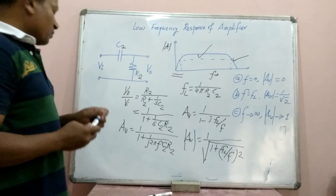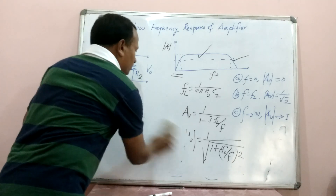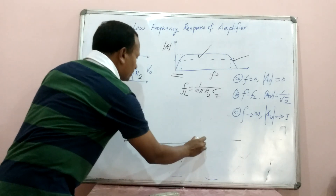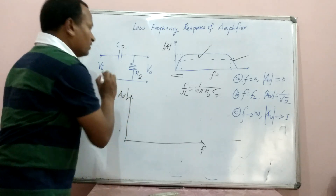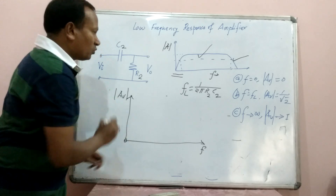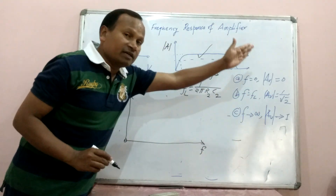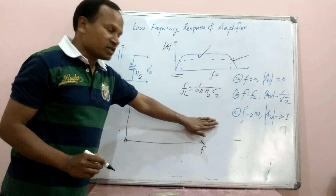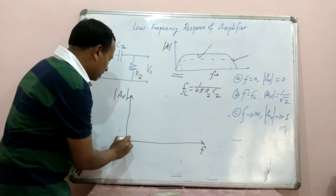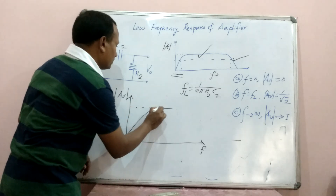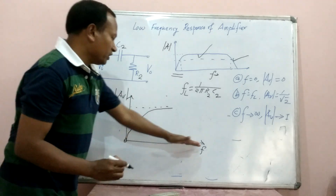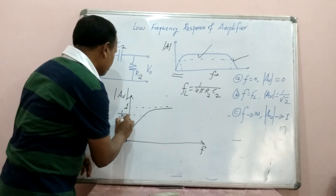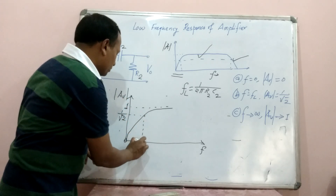Now let us draw the magnitude versus frequency response. At F equal to 0, gain is 0. At F equal to FL, gain is 1 upon root 2. And finally, it becomes 1 when F is tending to infinity. The nature of the plot will be parabolically increasing. The maximum possible value is 1, and the frequency at which the gain equals 1 upon root 2 times the maximum value is known as FL, the lower 3 dB cutoff frequency.